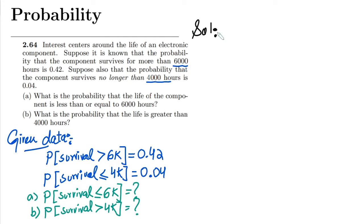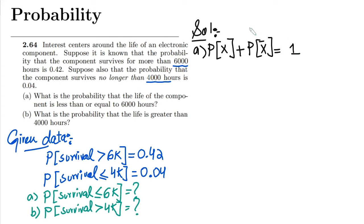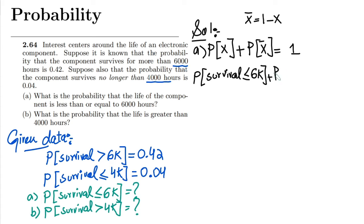Now for the solution. In part a, I apply the fundamental rule of probability: the overall probability of a component's survival and its failure equals 1. So P(X ≤ 6000) plus P(X > 6000) must equal 1. This is the fundamental complement rule of probability.